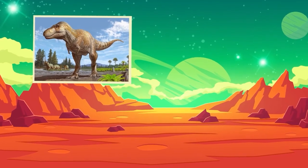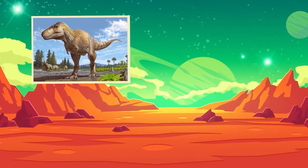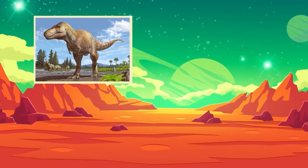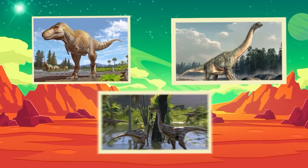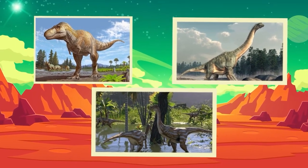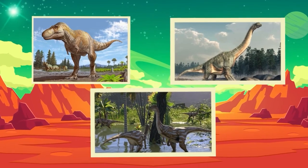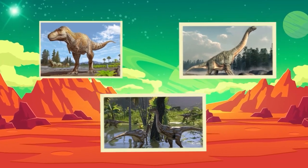Dinosaurs ate all kinds of things. Carnivores like T-Rex ate meat and hunted other dinosaurs. Herbivores like Brachiosaurus ate plants, leaves, and trees. Omnivores like some smaller dinosaurs ate both plants and animals. Their sharp teeth or flat teeth helped them chew their favorite foods.